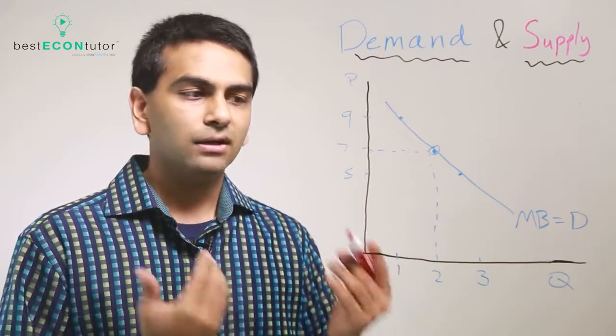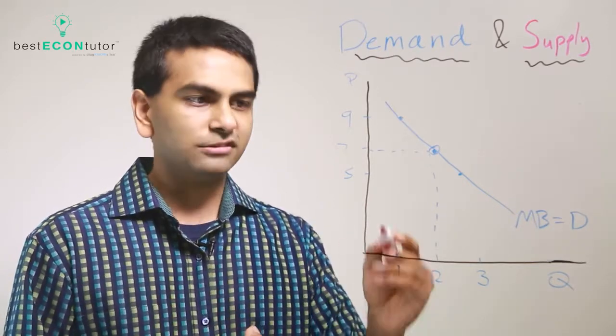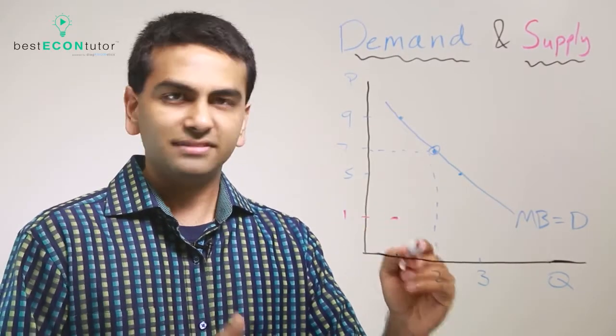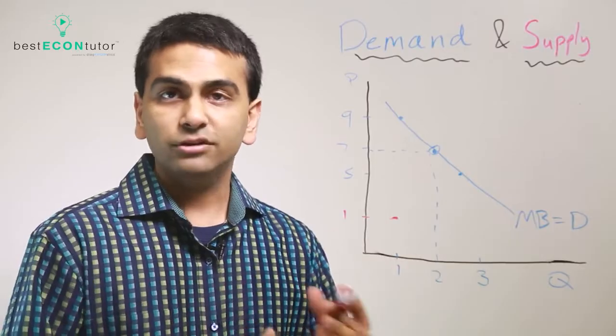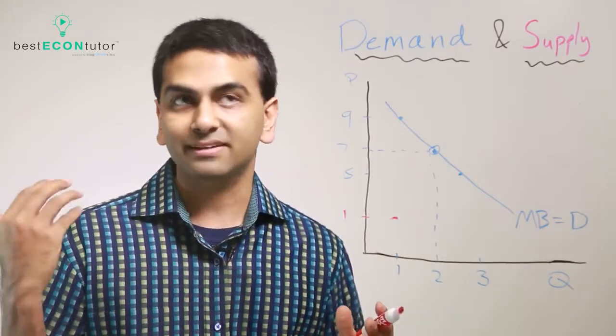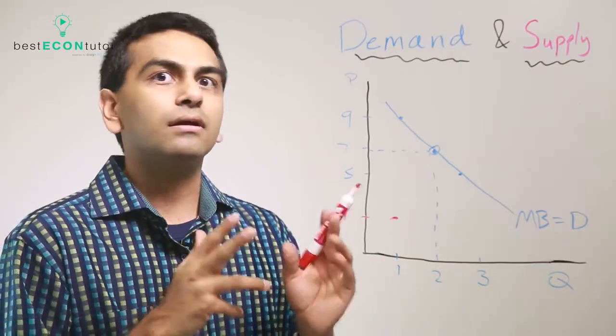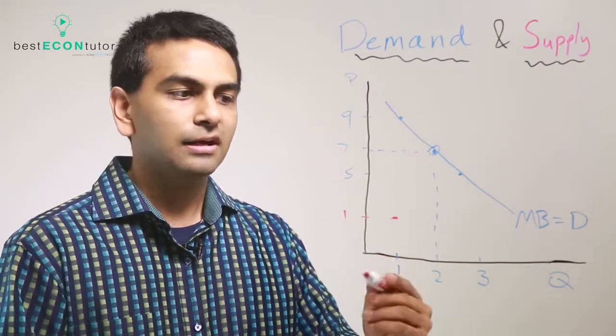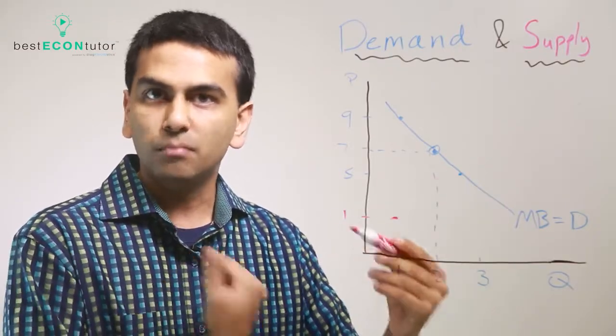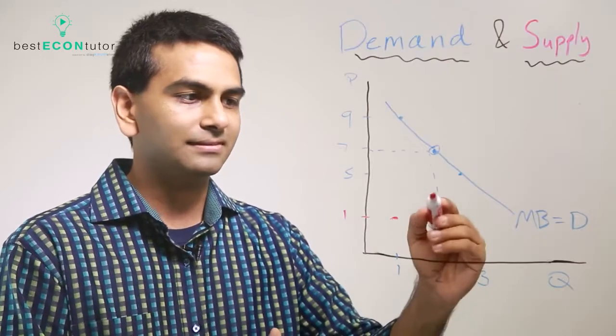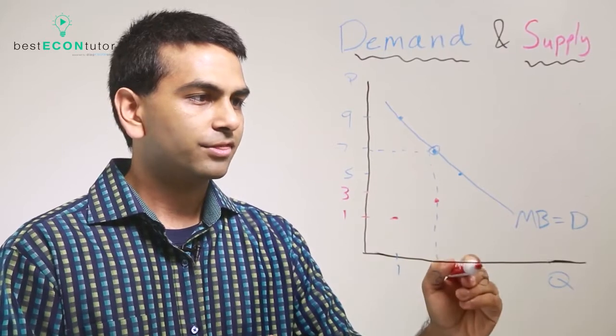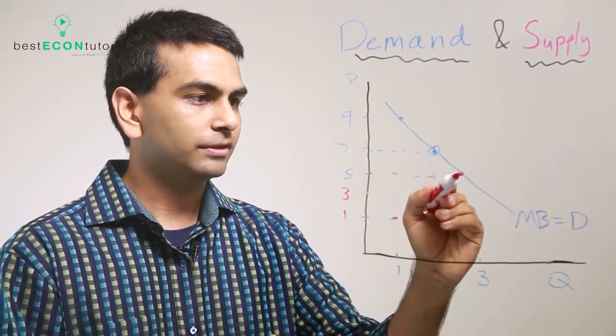One way to think about this: sure, the first slice of pizza might only cost a dollar to produce, but the second slice—now you're spending a lot of time making pizza, and at that point it's probably more profitable to make salads or something else. That's why it's a higher cost, including opportunity cost, for the second slice. That's why our supply curve, our marginal cost curve, is upward sloping. The second one costs three dollars to produce, the third one costs five dollars, and so on.